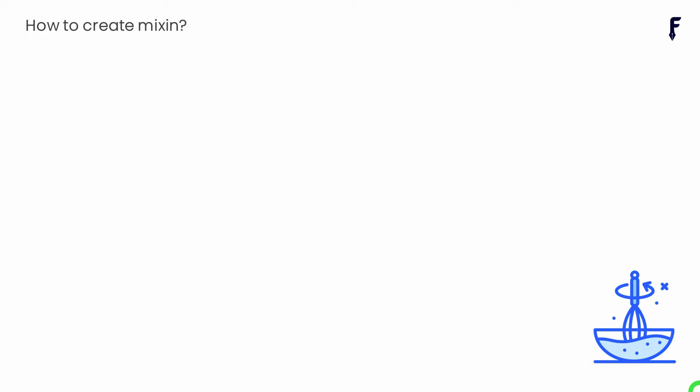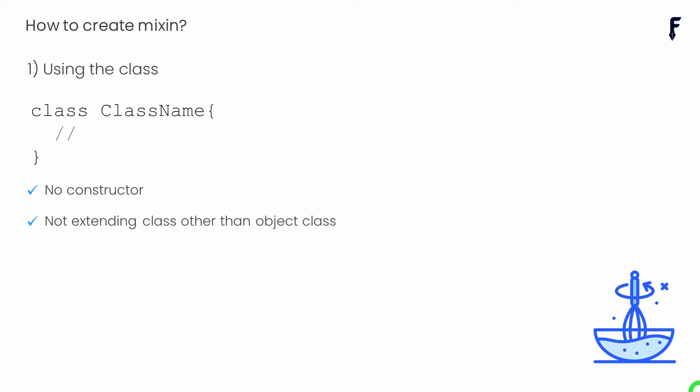Dart allows us to create a mixin in two different ways. The first is by using a regular class — whether abstract or concrete — which can be used as a mixin in Dart. However, there are two strong restrictions: first, there should not be any constructor in the class, and second, the class should not extend any class other than object. By default a class extends the object class and that's fine, but extending any other class is not allowed. If your class follows these two restrictions, it's good to go as a mixin.